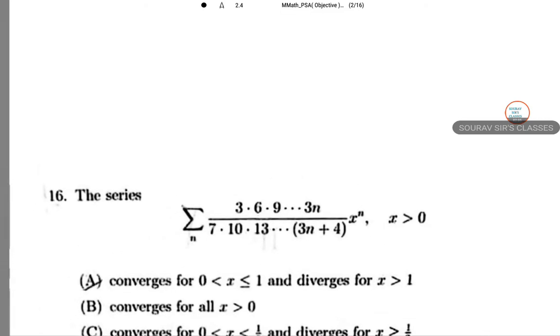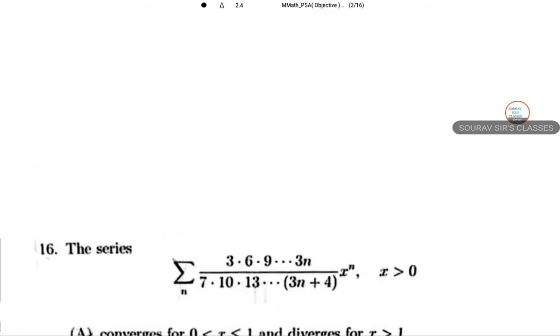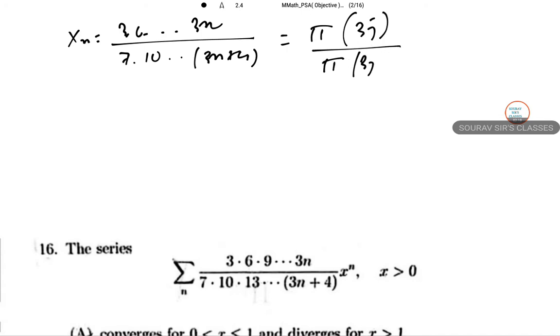Now a summation of a series is being provided and we need to find out where it converges. Pretty direct. So let xn equal 3·6·9···3n divided by 7·10·13···(3n+4). Without the summation we are writing this. The product can be written as product of 3j divided by product of (3j+4), j equals 1 to n.